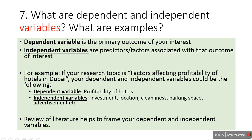The next question is: what are dependent and independent variables? The dependent variable is the primary outcome of interest, and independent variables are the predictors or factors associated with that outcome. For example, in a study on factors affecting profitability of hotels in Dubai, the dependent variable is the profitability of hotels, and the independent variables are the factors that influence it — such as investment by the hotel, location, cleanliness and hygiene, parking space, and advertisement or popularity of the hotel. Reviewing the literature helps to frame your dependent and independent variables.